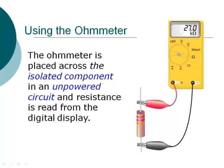We're going to use a multipurpose meter — you can see there's a sign for ohms, volts, and amps on it. The key thing about measuring the resistance of any device is that you must isolate the component in an unpowered circuit. If you put the leads across a live circuit that has current going through it with your meter set to resistance, you're going to burn out the meter.